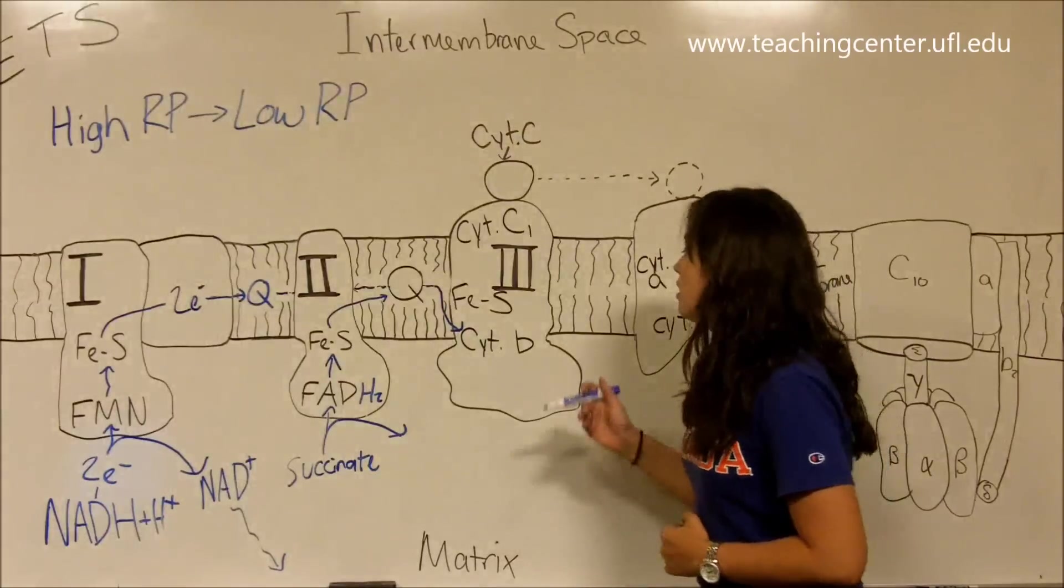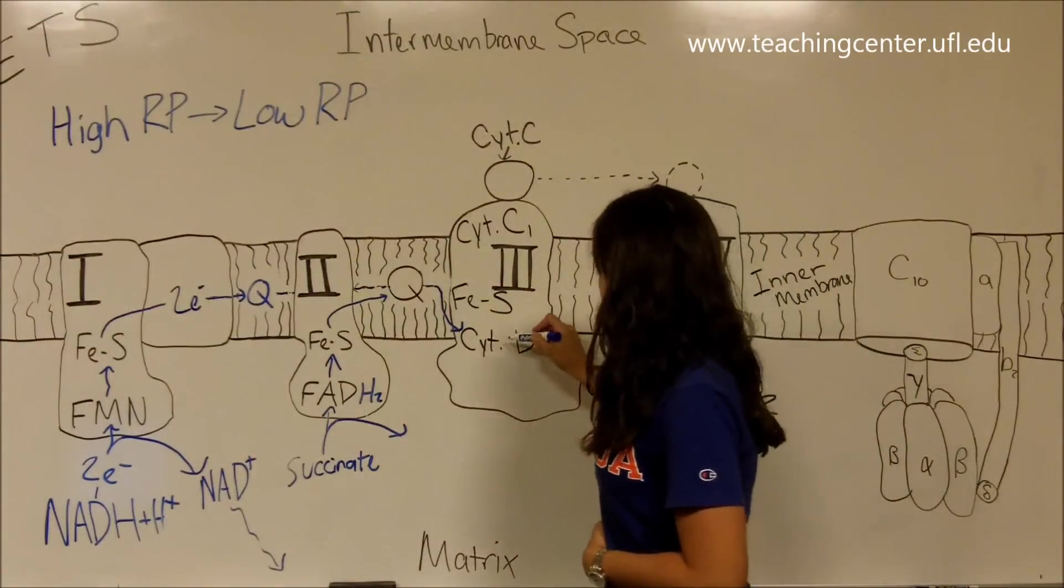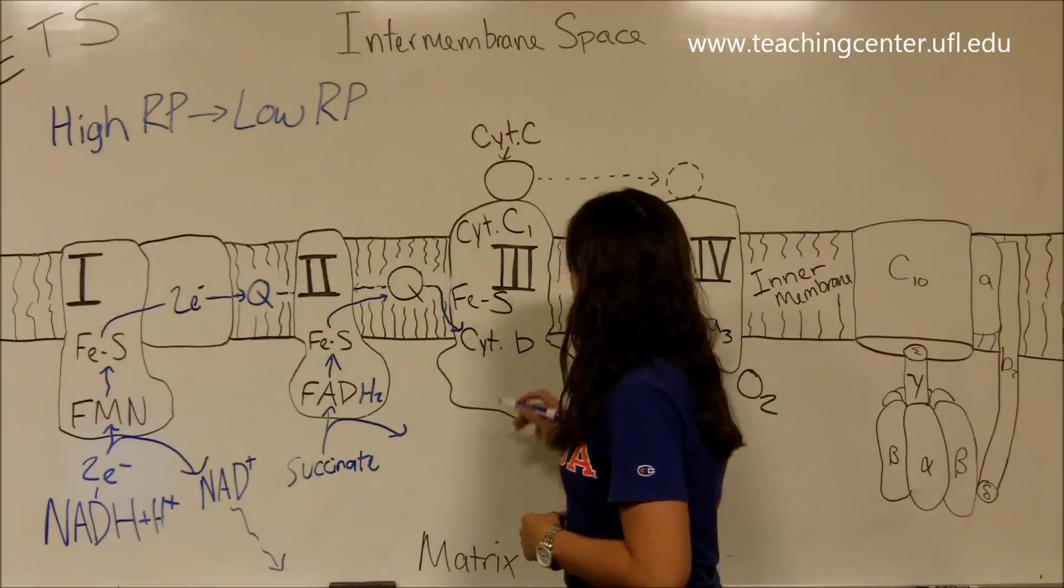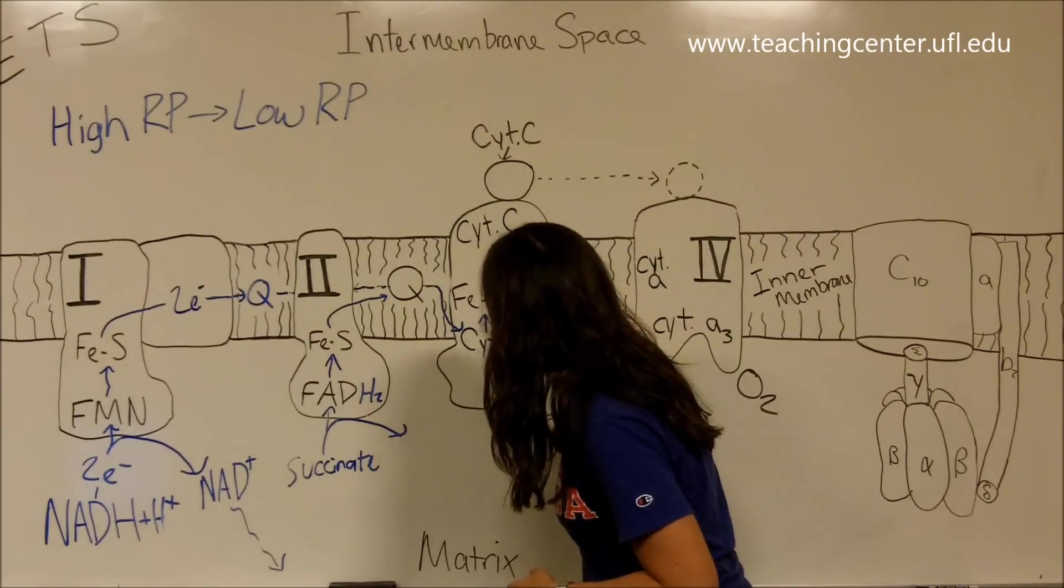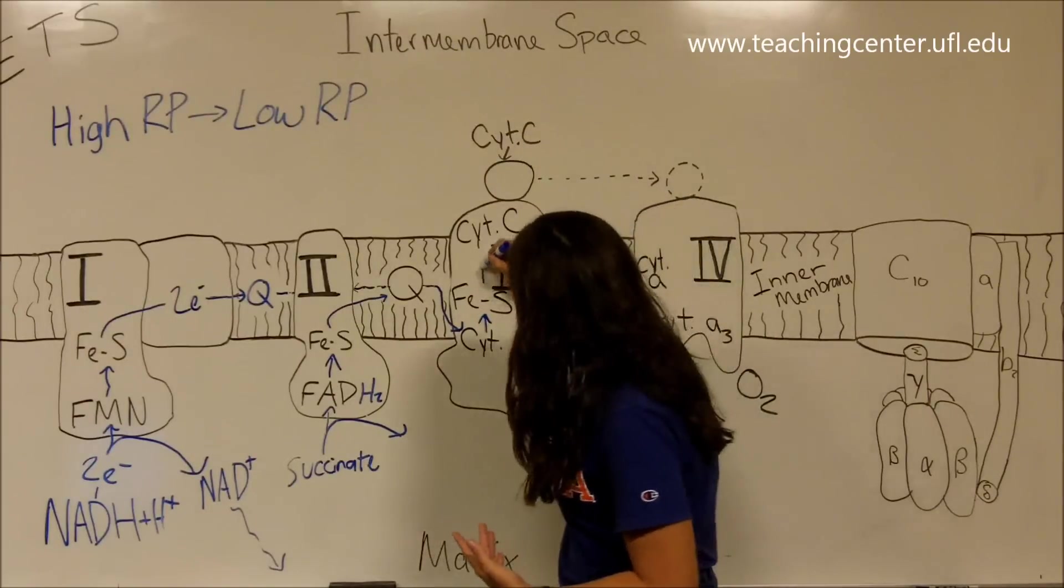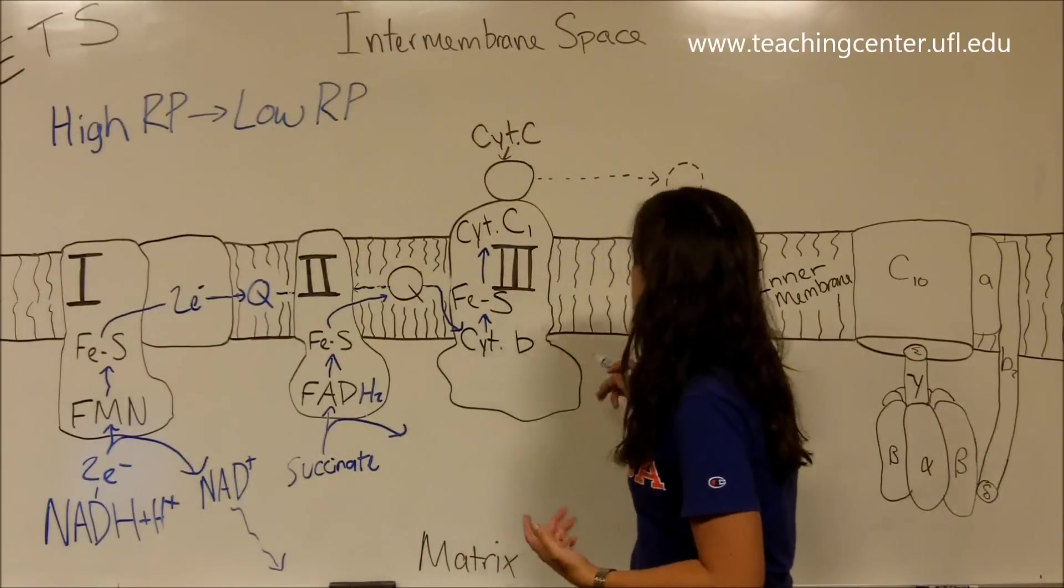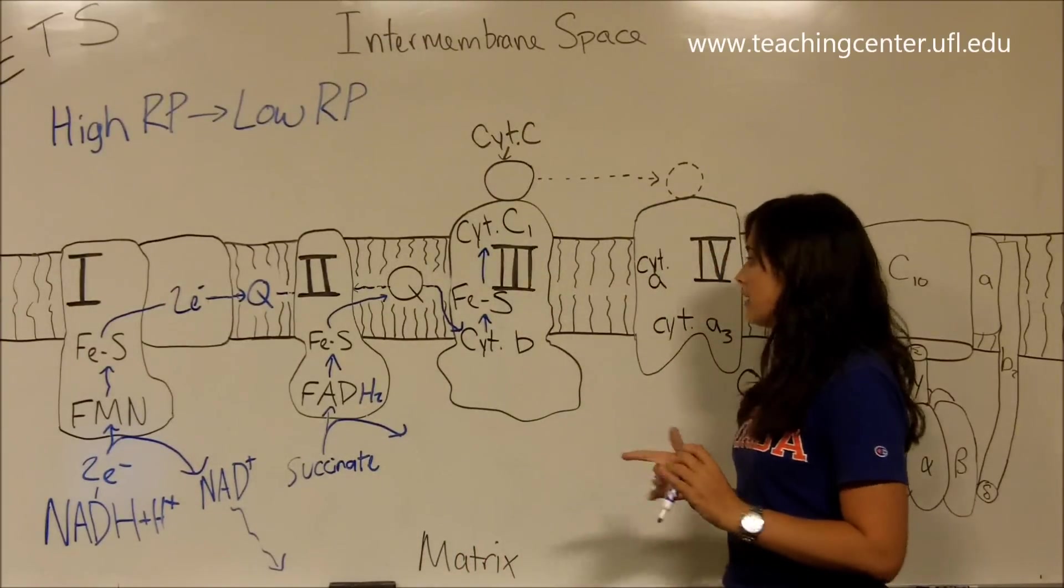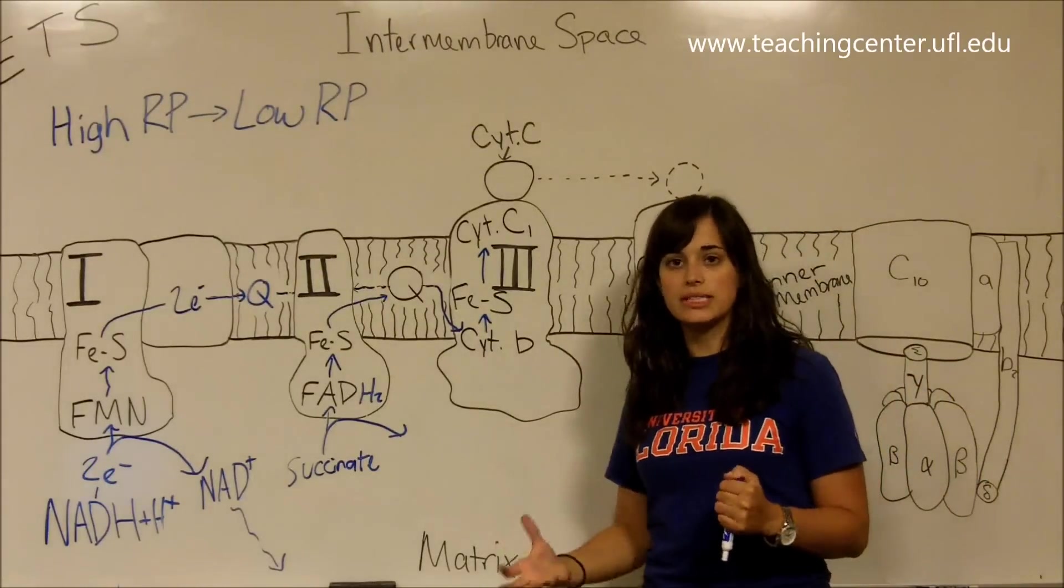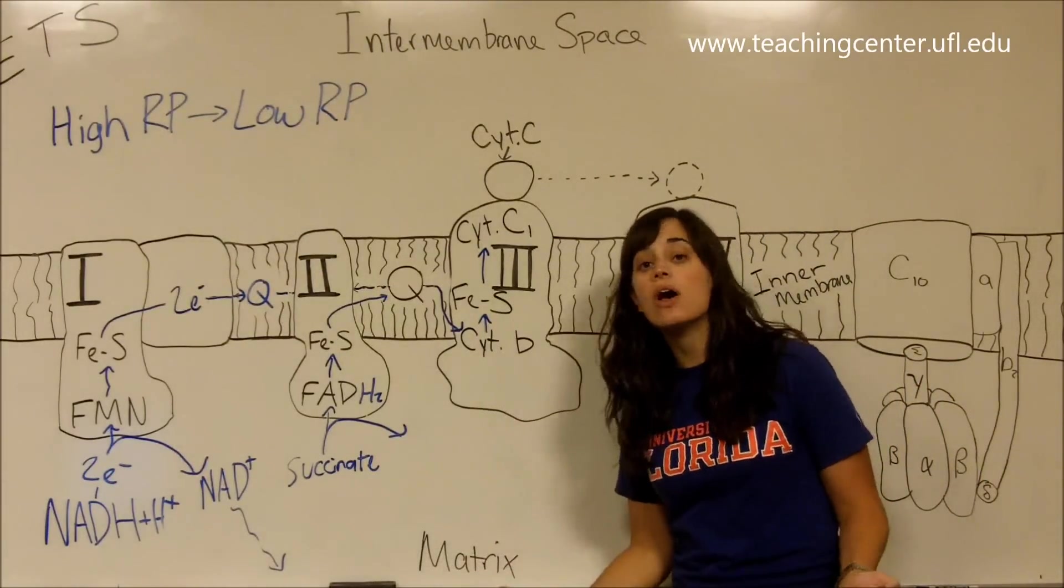We start at cytochrome B here. This is complex III. The two electrons are transferred to an iron-sulfur center, which we've seen before. And then they're transferred to cytochrome C1. Now that I'm talking about cytochromes, I should probably introduce you to a little bit of what a cytochrome is.